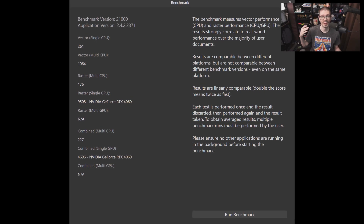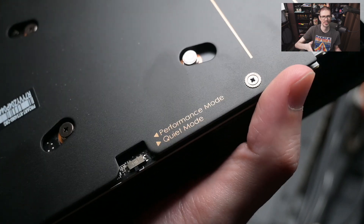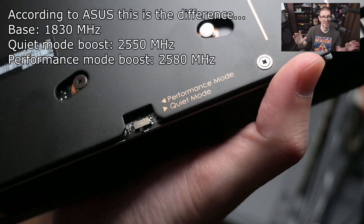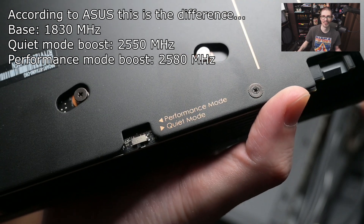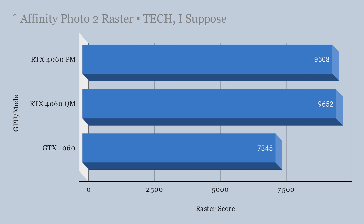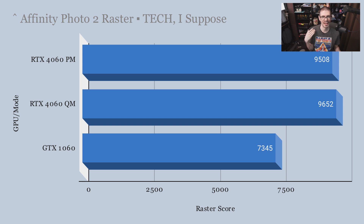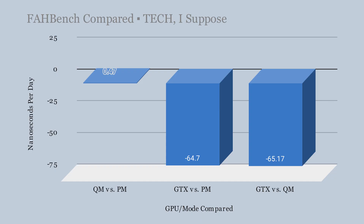One thing to note about the Asus ProArt 4060: it has two modes — performance mode and quiet mode. Spoiler: there wasn't really a noticeable difference, but both are shown in the graphs. With the GTX 1060 versus the 4060, there is a noticeable improvement in the Affinity Photo 2 score, though how that applies to real usage is hard to say. With large images or many layers and effects applied, you may notice a difference.